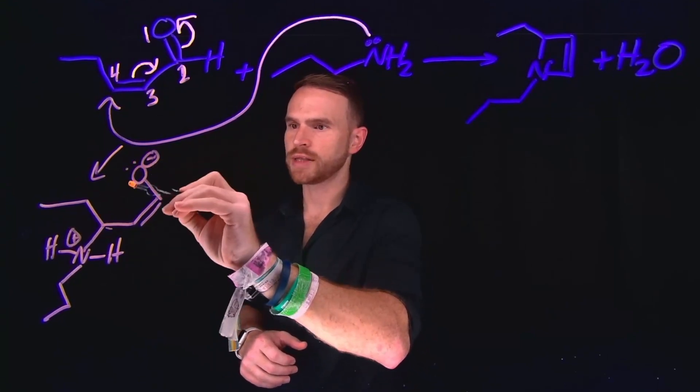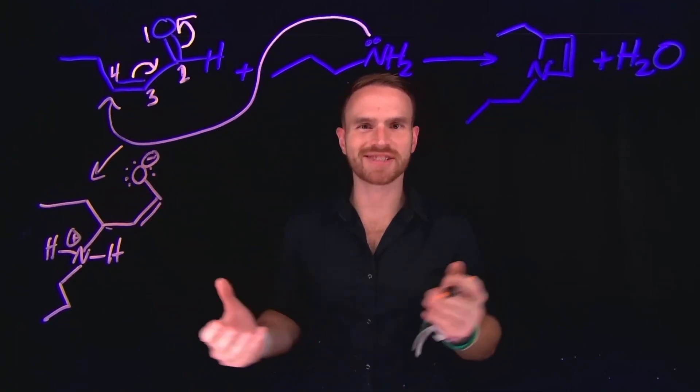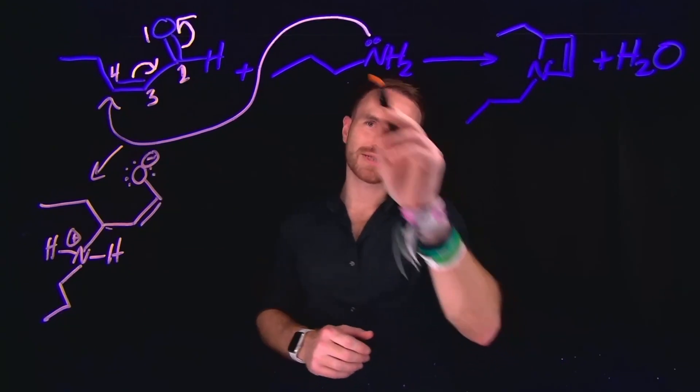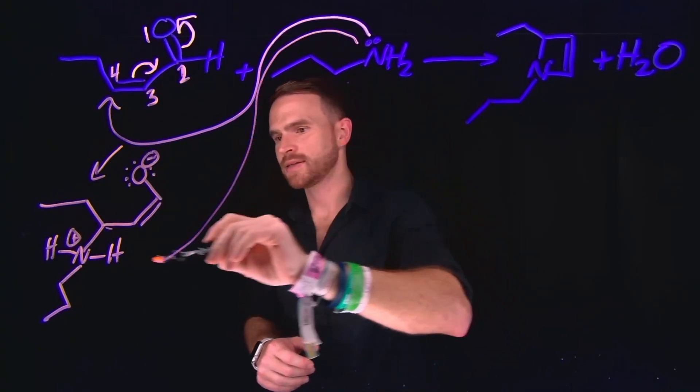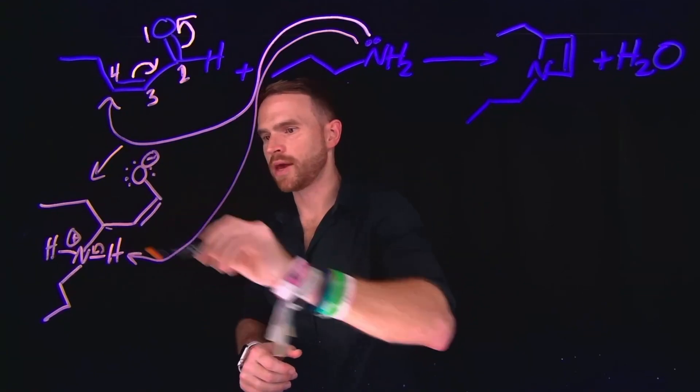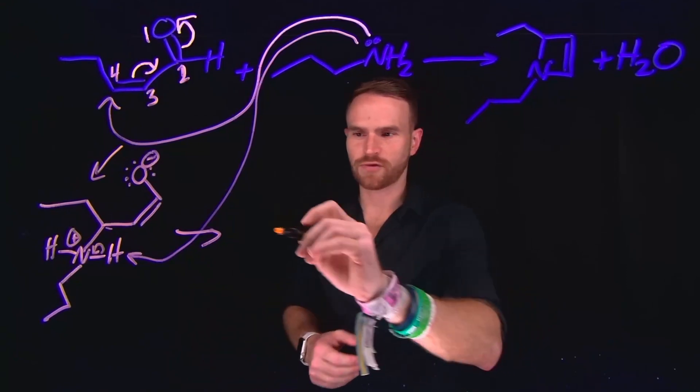So this forms what is called an enolate anytime you have an alkene with a negatively charged oxygen. That's called an enolate. And from here, a second molecule of propylamine can come and deprotonate this hydrogen, leaving us with a neutral nitrogen in the following step. So that is a proton transfer.